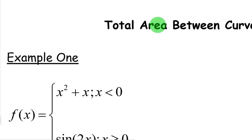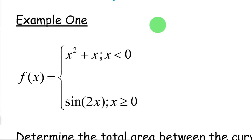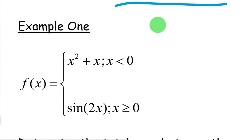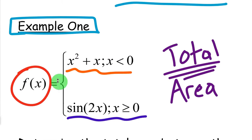For this lesson, we're going to be looking at the total area again, but we're going to be looking at a different kind of function — namely a piecewise function. So it's going to be the total area between the curve and the x-axis of a piecewise function. This is the same example we used when we did the net area or the definite integral. The only difference is that now we're going to find the total area.